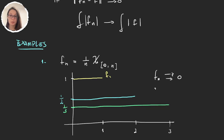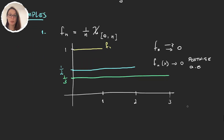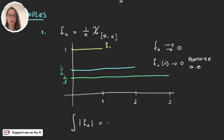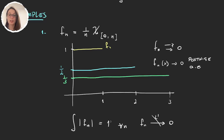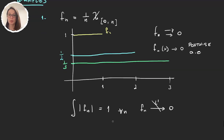Since these functions converge uniformly to 0, they also converge pointwise, and pointwise implies almost everywhere. But what happens with L1? The integral of fn is always 1: for the first it's 1×1, for the second 1/2×2, for the third 1/3×3. So these integrals are always 1 for every n, and the functions are not converging in L1 to 0. This example shows that uniform convergence does not imply L1 convergence.